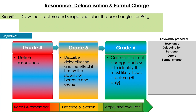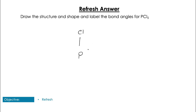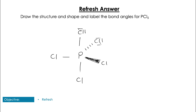Firstly though, here's a question just to get started: draw the shape and label the bond angles for PCl5. Take a moment and have a go at that. So hopefully you got that it's the five Cls connected with a single bond to the central phosphorus atom and then filling in all the lone pairs.